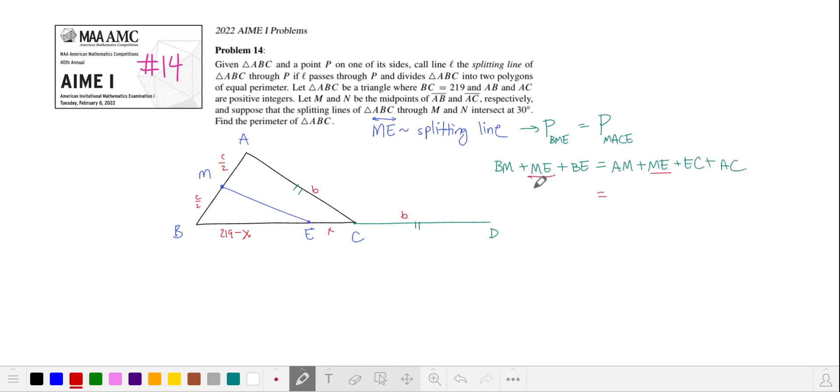We'll combine like terms and substitute these variables and combine terms again. We see that 219 minus x is equal to x plus b. This makes E the midpoint of segment BD.